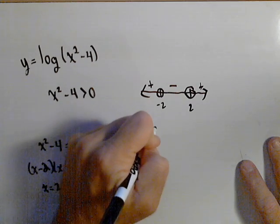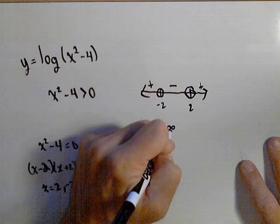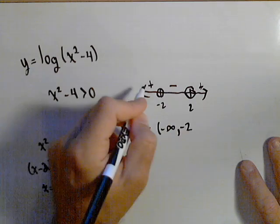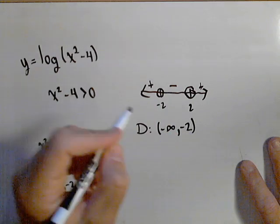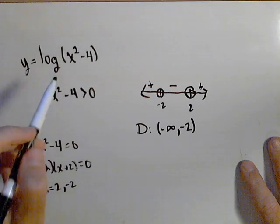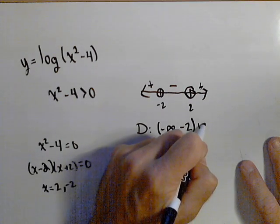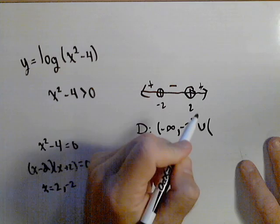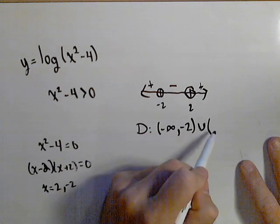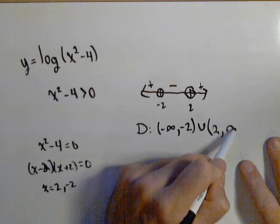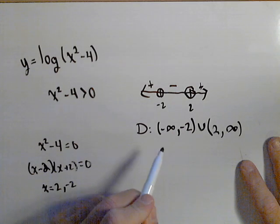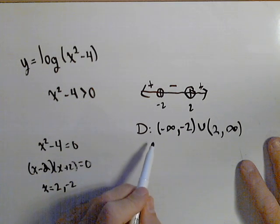My domain is going to be negative infinity to negative two because it's positive and I don't want to include negative two because that's where it's zero. I have another place where it's positive so I'm going to union those together with the u and that happens from two, not including two, to infinity. So there is my domain of my logarithmic function.